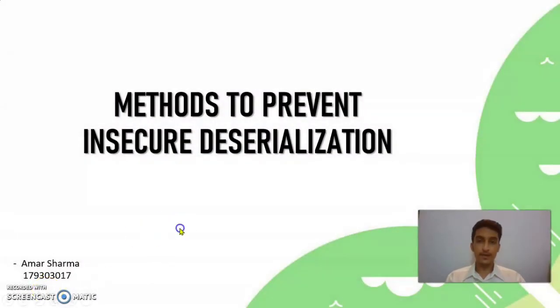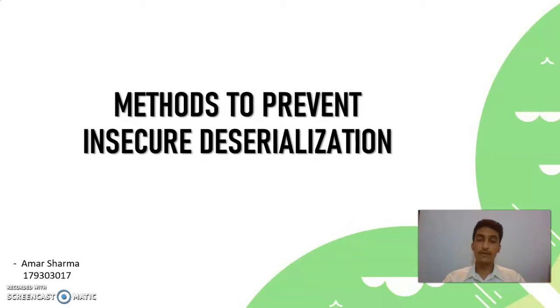Hello, I am Amar Sharma and I am going to discuss the different methods to prevent insecure deserialization. As we know, if no proper precaution is taken while deserializing objects, this may cause serious attacks like RCE (Remote Code Execution), DOS (Denial of Service), and even the attacker can get confidential data from the server. So now let's move forward and take a look at the different methods to prevent insecure deserialization.